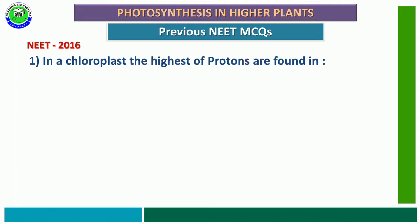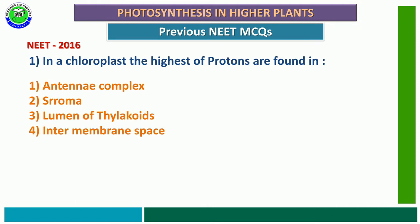In NEET 2013, there are no questions from this chapter. But in NEET 2016, the first question is: In a chloroplast, the highest concentration of protons are found in — first option, antennae complex; second option, stroma; third option, lumen of thylakoid; fourth option, intermembrane space.